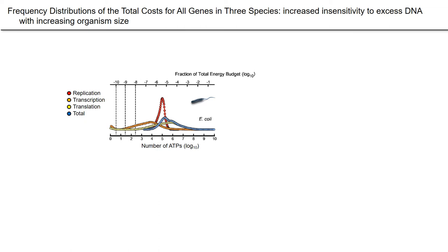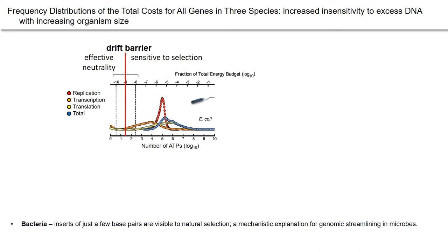This indicates that there are substantial differences in the granularity of mutational effects subject to selection in different phylogenetic lineages. For E. coli, on the lower axis we have the total cost of a full set of genes in terms of ATP hydrolysis per cell cycle; dividing by the total cost of a cell gives us the selective disadvantage of a gene or gene-sized insert under the assumption it's not paying for itself. The red line is the position of the drift barrier in E. coli, which has an NE of roughly 10^9 individuals. The distribution of gene costs in E. coli is far to the right of the drift barrier, meaning inserts of just a few base pairs in this microbial species are visible to natural selection — providing a mechanistic explanation for genomic streamlining in microbes based on bioenergetic arguments.